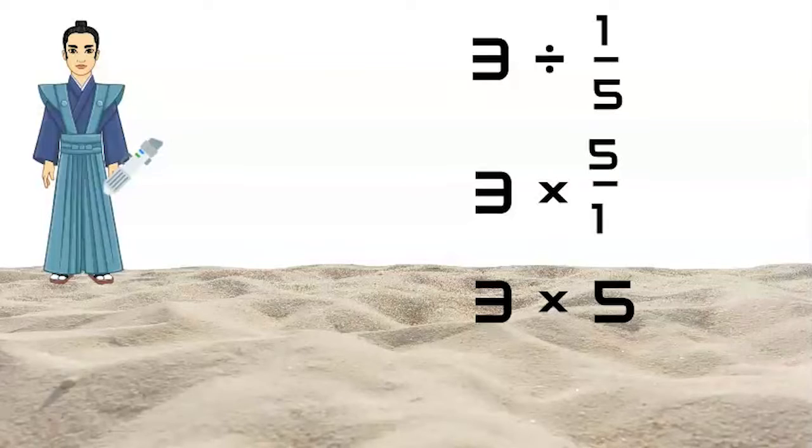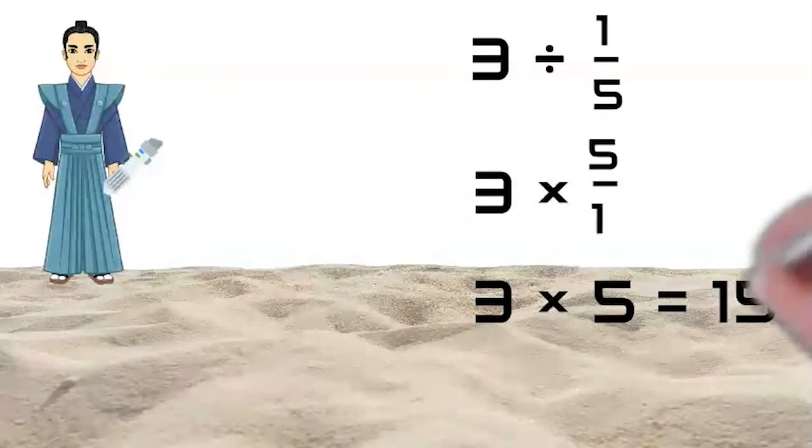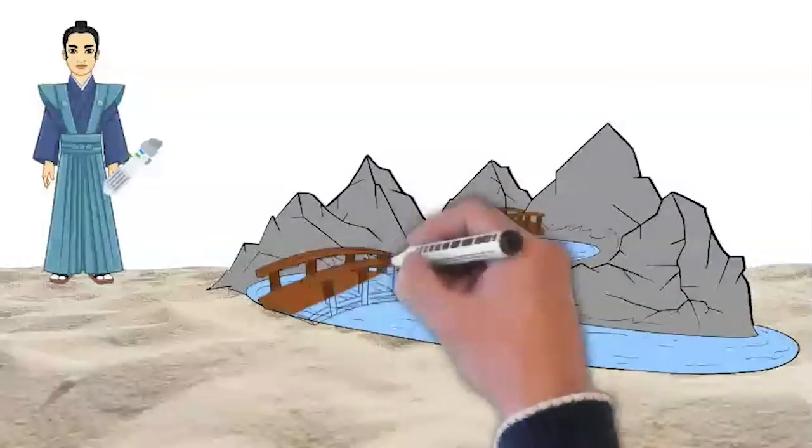So our expression becomes three times five. Now we can just multiply. Three times five equals 15. So, it will take the heroes 15 hours to build all three bridges.